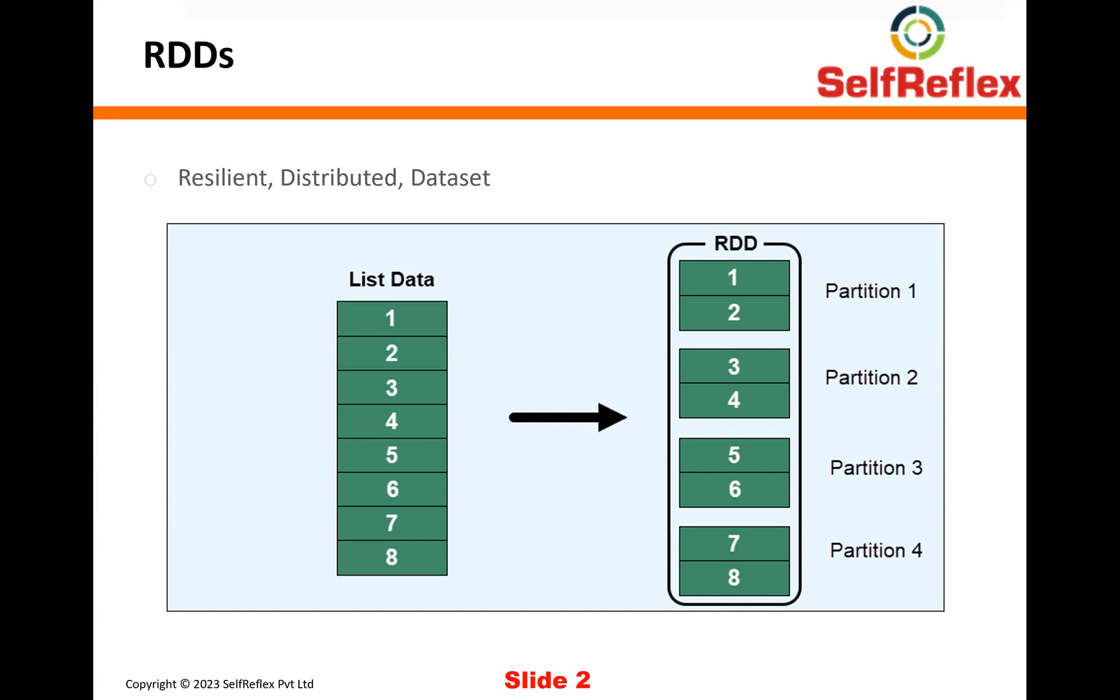So what Spark does is, using RDDs, it can actually distribute your data across machines. So if you look at this picture, your original data set contains eight rows. Once you create an RDD from this data, Spark will partition it into multiple partitions.